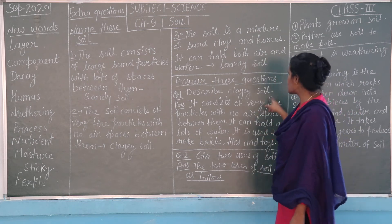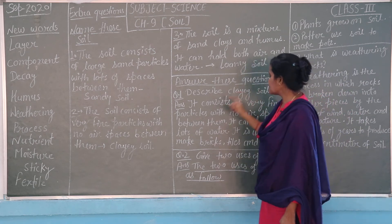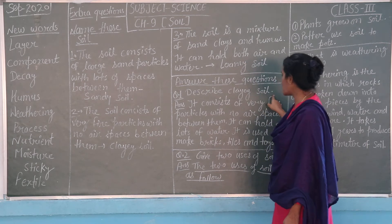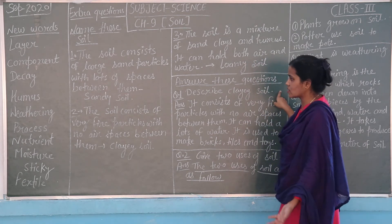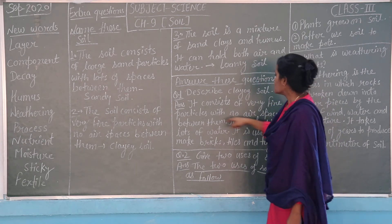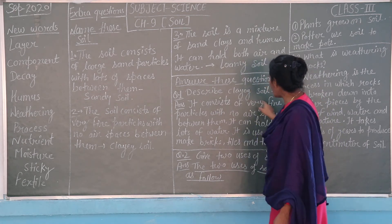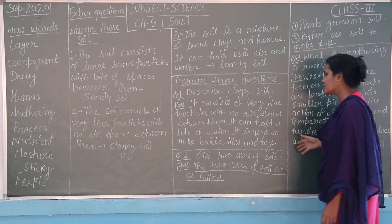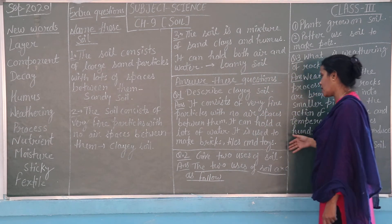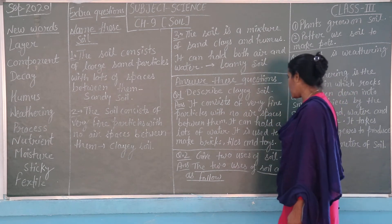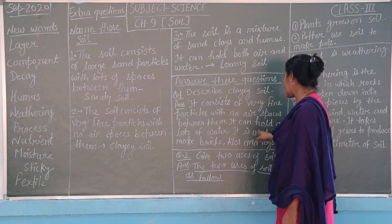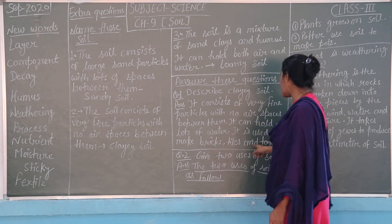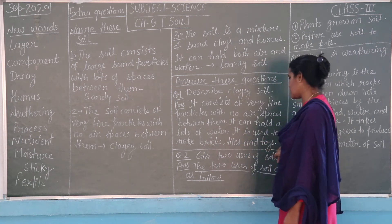Now answer these questions. Question number one: describe clay soil. It consists of very fine particles with no air space between them, and it can hold a lot of water. It is used to make bricks, tiles and pots.